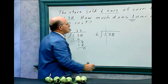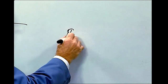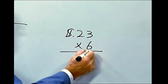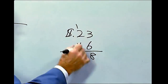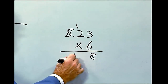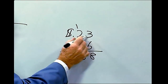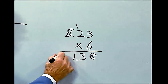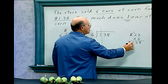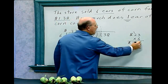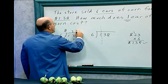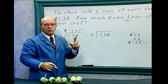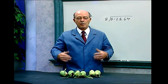Let's double check. One ear of corn costs twenty-three cents — multiply that by six. Six times three is eighteen, carry the one. Six times two is twelve, plus one is thirteen. There are two decimal places, so we do that also in the answer. The six ears of corn cost a dollar thirty-eight, so we know this answer checks. One ear of corn costs twenty-three cents.